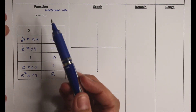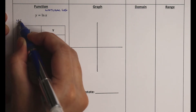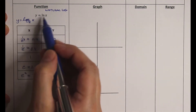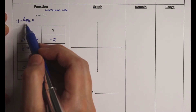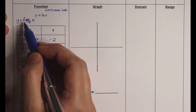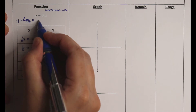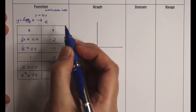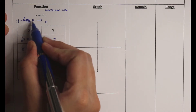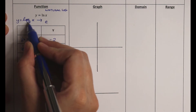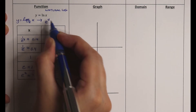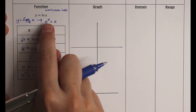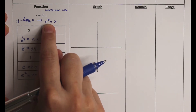Let me explain this function. Y equals natural log of x can be written as log base e of x — these are identical; it's just that natural log is used so commonly it gets its own notation. When you see a logarithm, the little number at the base is the actual base of the exponential function. The base is raised to the exponent y, and what it equals is x.